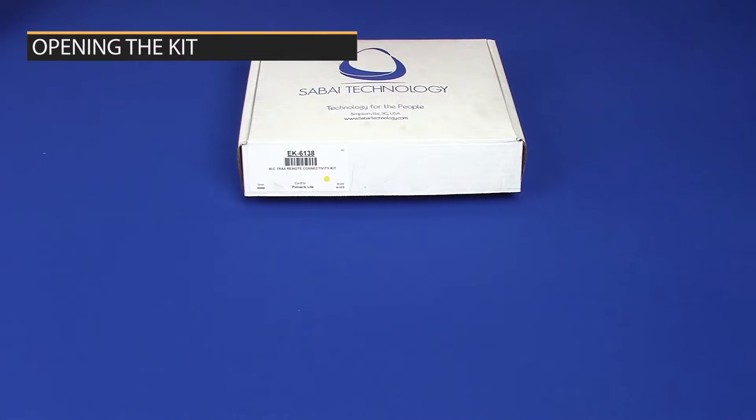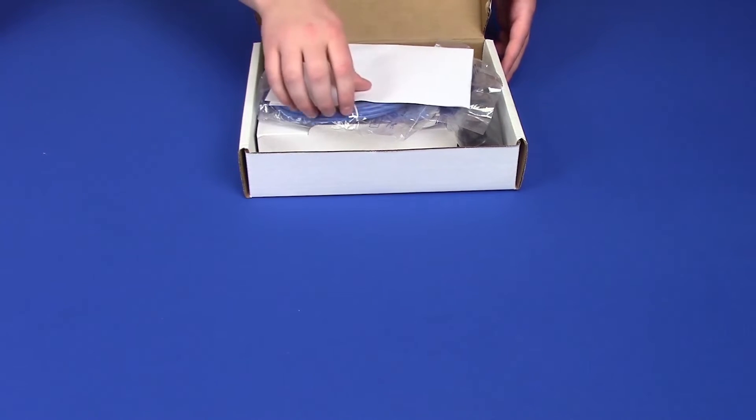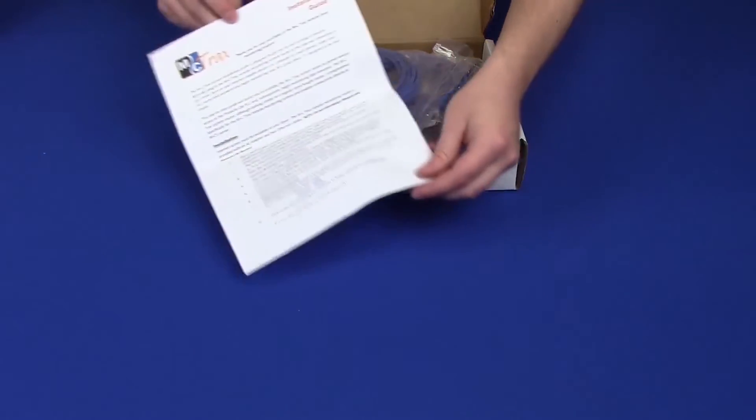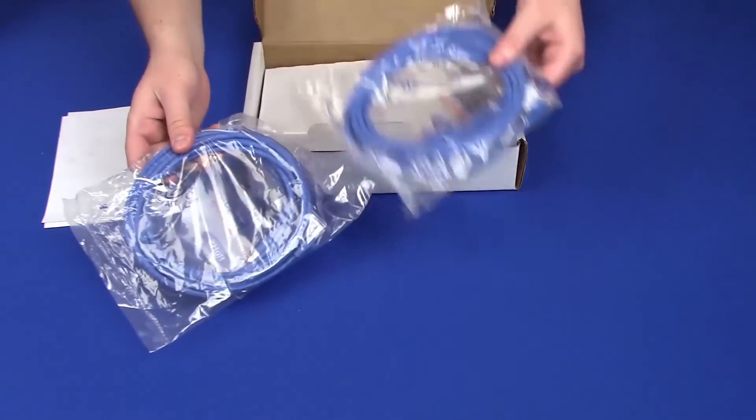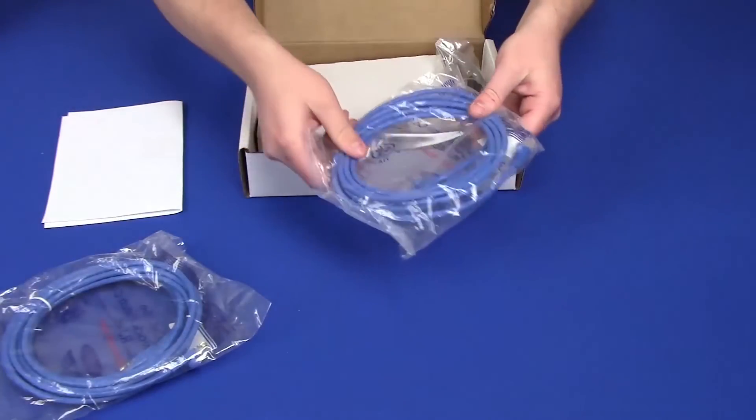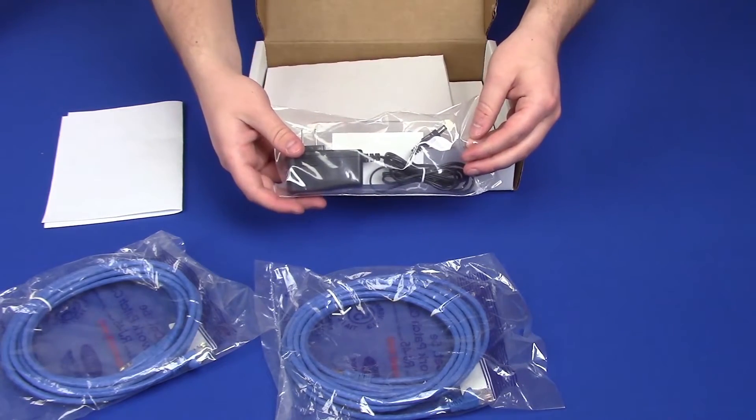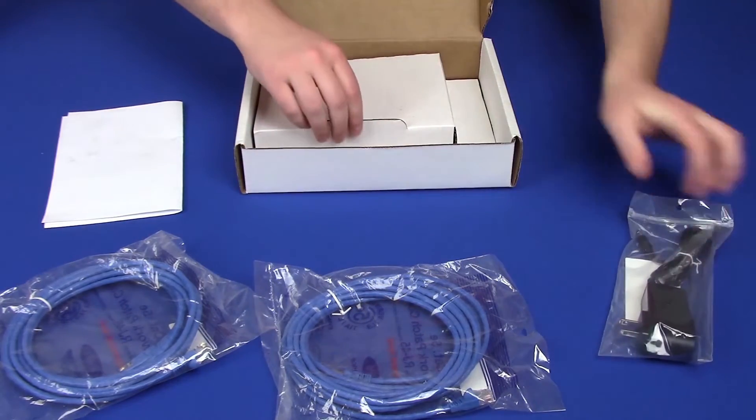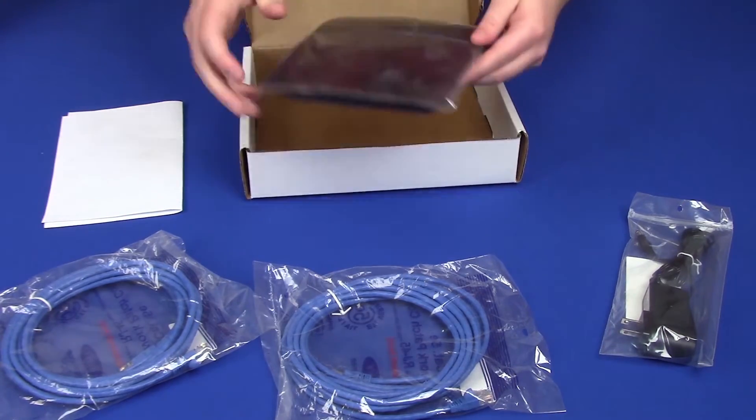Now that we understand how MCTrax works, let's take a look at a kit and what comes with it. Your kit will be in a box like this one, and we want to look inside and make sure that all the appropriate parts have come with it. We're going to be looking for instructions, two blue ethernet cables, a power supply, and lastly, the router.